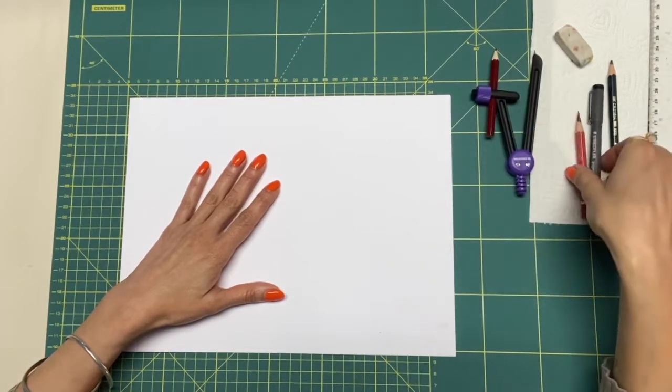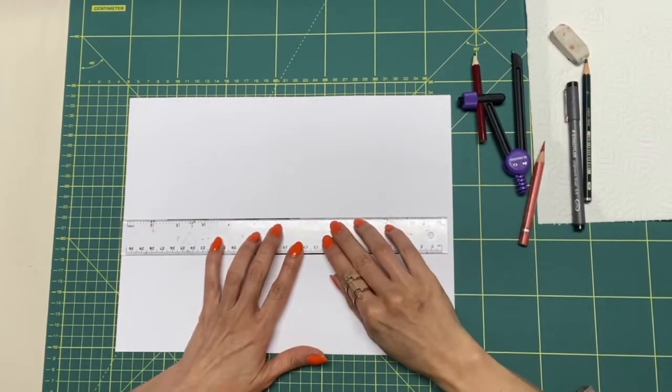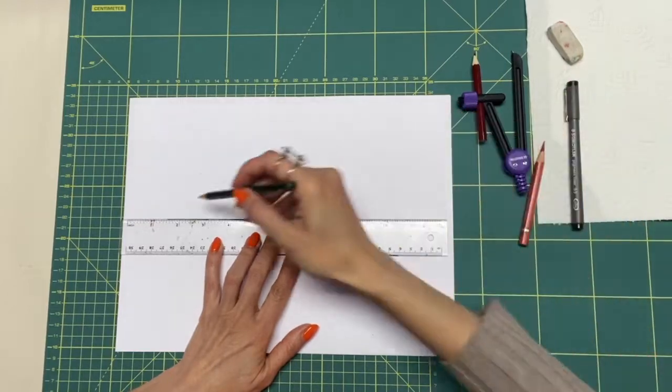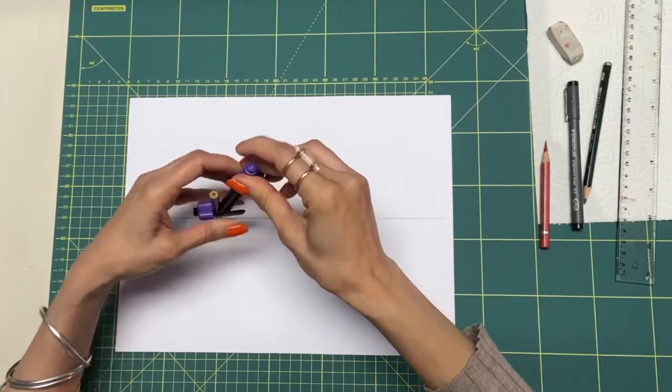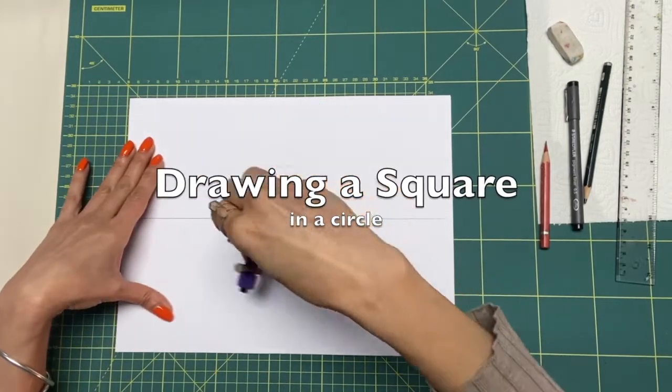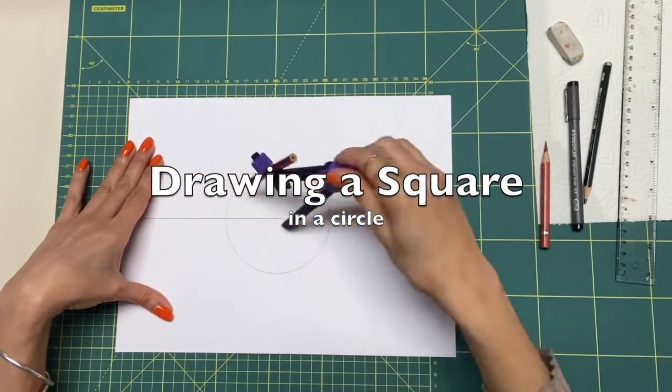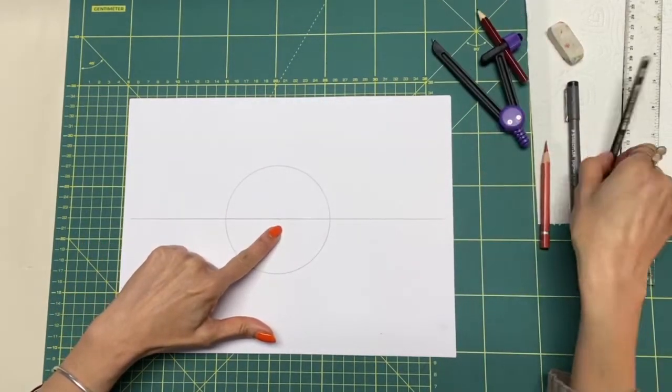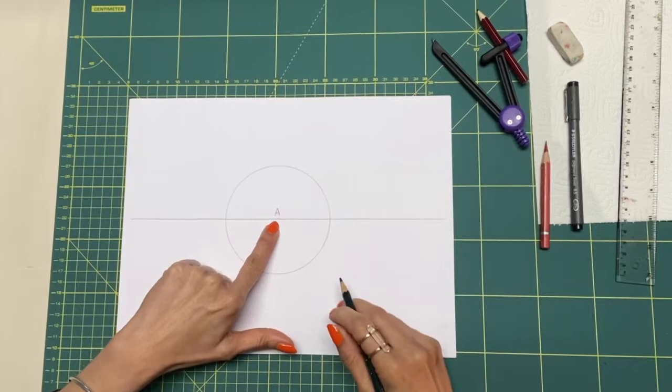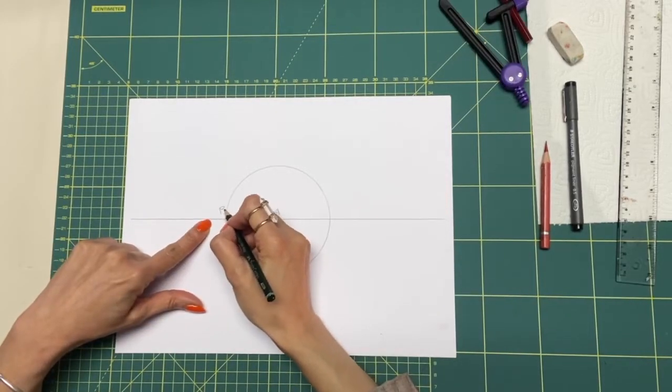Start by drawing a horizontal line. Draw a circle with 10 centimeters diameter. We are going to draw a square inside this circle. The center is point A and I call the other two points of the circle's diameter B and C.